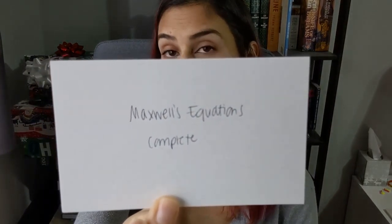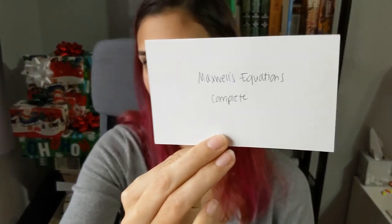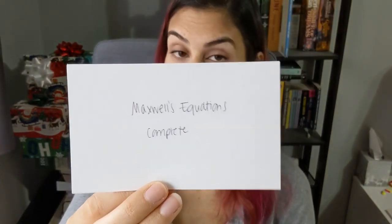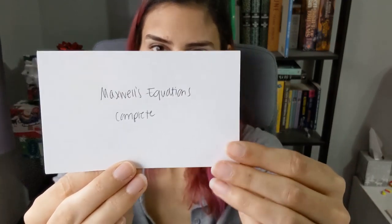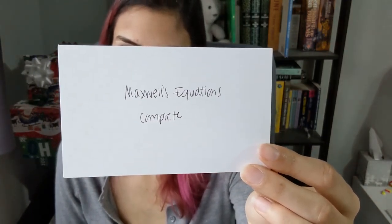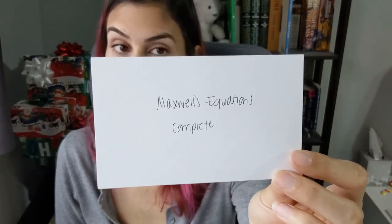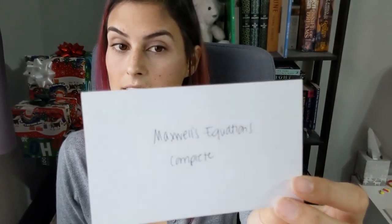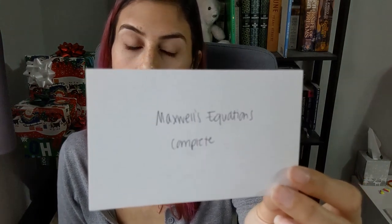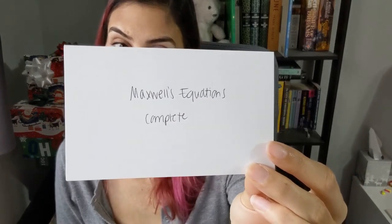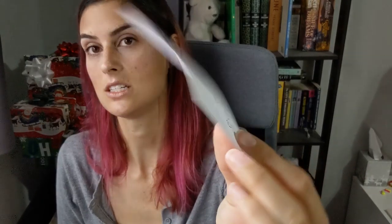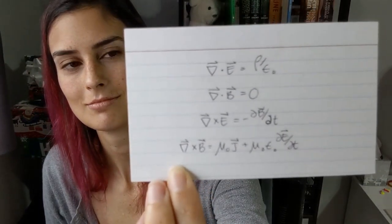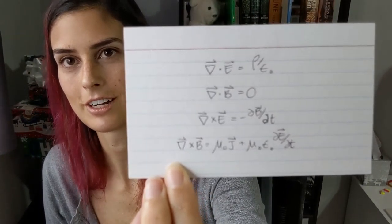Maxwell's complete equations — this version brings them all together. The divergence of E equals rho over epsilon naught; divergence of B equals zero; the curl of E equals negative dB/dt; and the curl of B equals mu naught J plus mu naught epsilon naught dE/dt — where those are partial derivatives. Very famous equations — I still forget them.